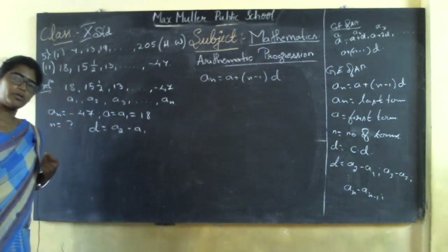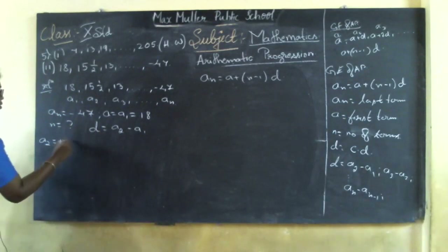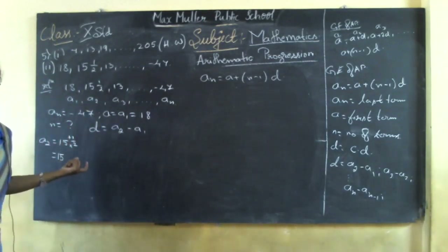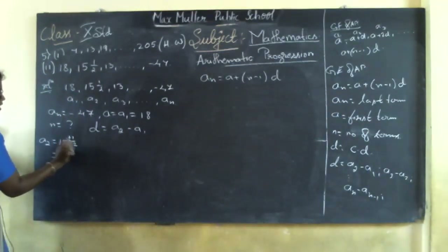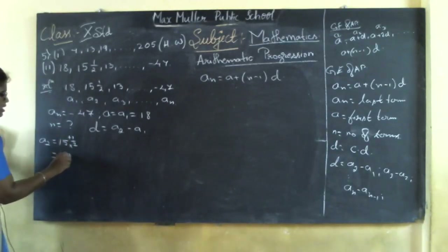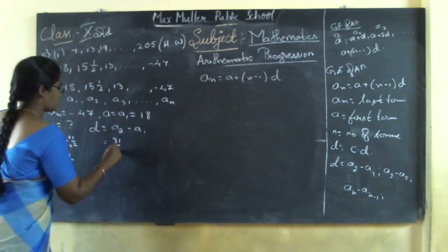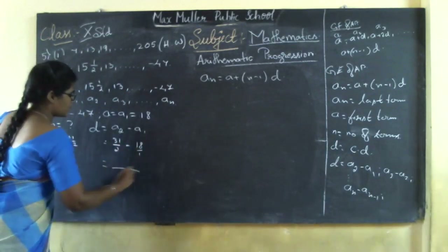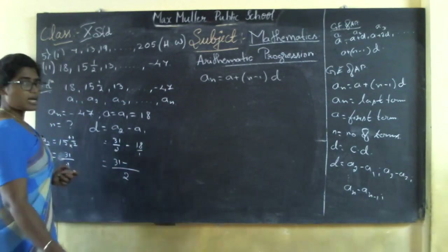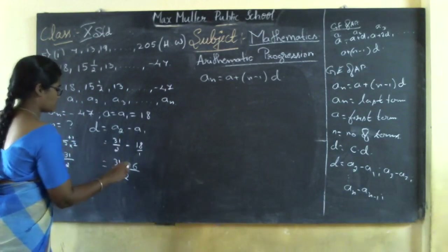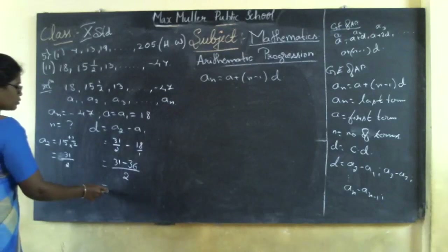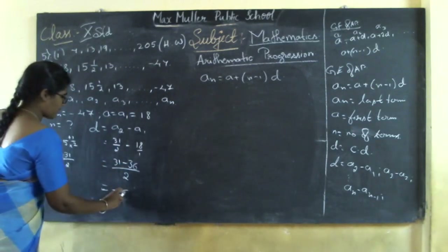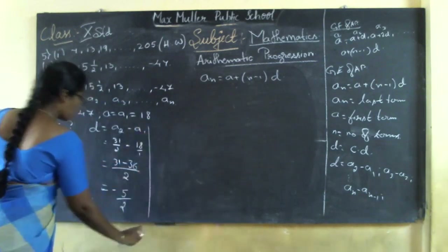a2 is 15½. To convert to proper form, multiply the whole number by the denominator and add the numerator: 15 × 2 = 30, plus 1 = 31. So a2 = 31/2. Then d = 31/2 − 18. Since denominators are different, we get (31 − 36)/2 = −5/2. So the common difference is minus 5 by 2.